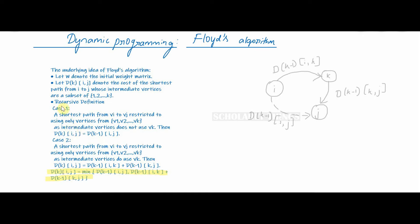Finally we combine case 1 and case 2 as dk(i,j) is equal to minimum of dk-1(i,j), dk-1(i,k) plus dk-1(k,j). This is the formula that we need to remember for solving the problems.